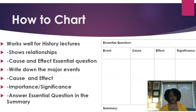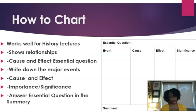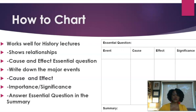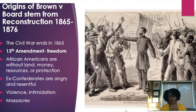Another strategy is charting, which works very well for history lectures. It helps to show relationships and can be used for essential questions that deal with cause and effect. You write down the major events, listen for and write down the cause and effects, and the most important aspect is to go back and look for the significance — what was the importance of the events, causes, and effects? Just like Cornell notes, you take all this information, review it, and use it to answer the essential question in the summary. All right, so let's begin.